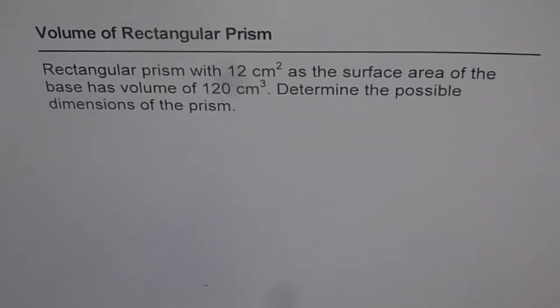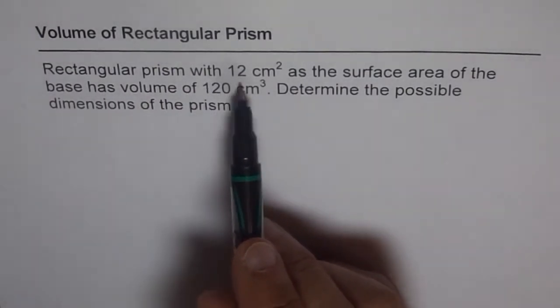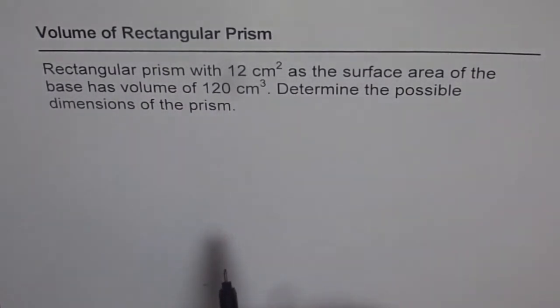Here is another interesting question where reverse calculation will be employed. It is based on volume of a rectangular prism. The question is, rectangular prism with 12 cm² as the surface area of the base has volume of 120 cm³. Determine the possible dimensions of the prism.